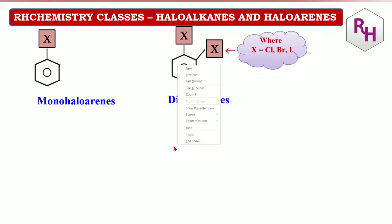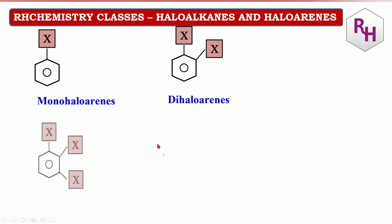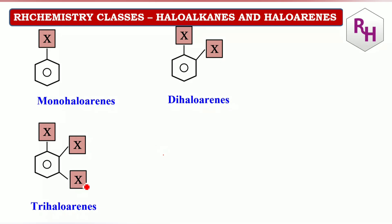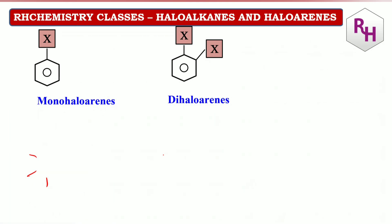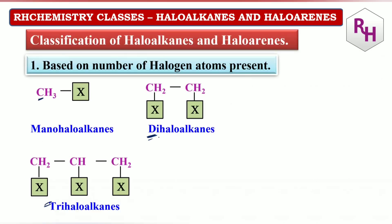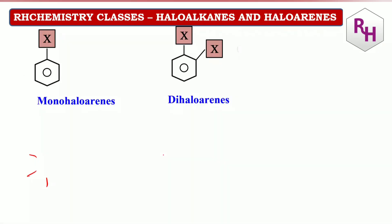Based on the number of halogen atoms: monohaloalkanes, dihaloalkanes, trihaloalkanes. Remember: mono, di, tri — this is the first classification. Also for haloarenes: mono, di, trihaloarines. The second classification is based on the SP3 hybridized carbon to which the halogen is attached.